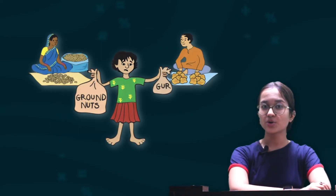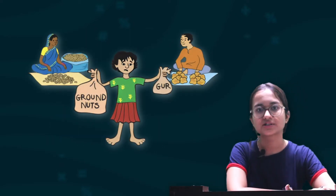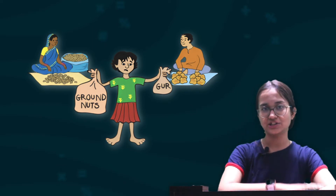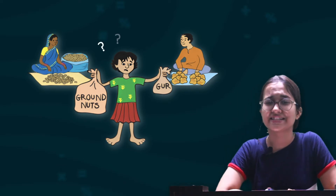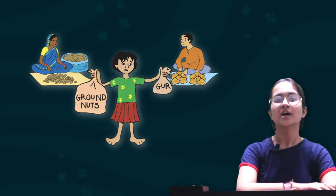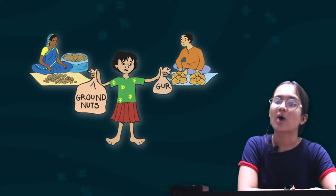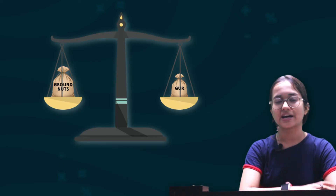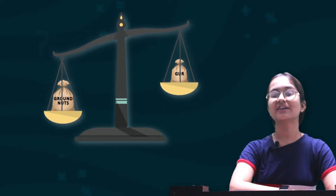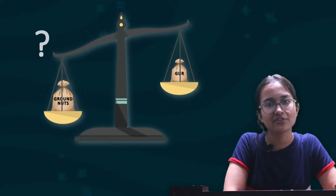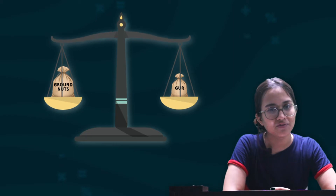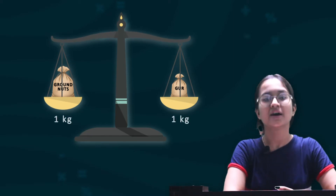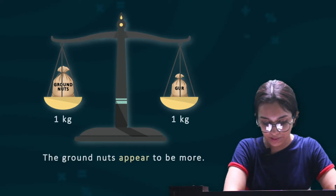She has ghee as well as ground nuts, and both of them are 1 kg in quantity. Now she feels that the ground nuts look more. So we need to answer whether they have the same weight or they are different in weight because they are looking different. Actually they are the same in weight because they both weigh 1 kg, but the ground nuts appear to be more.